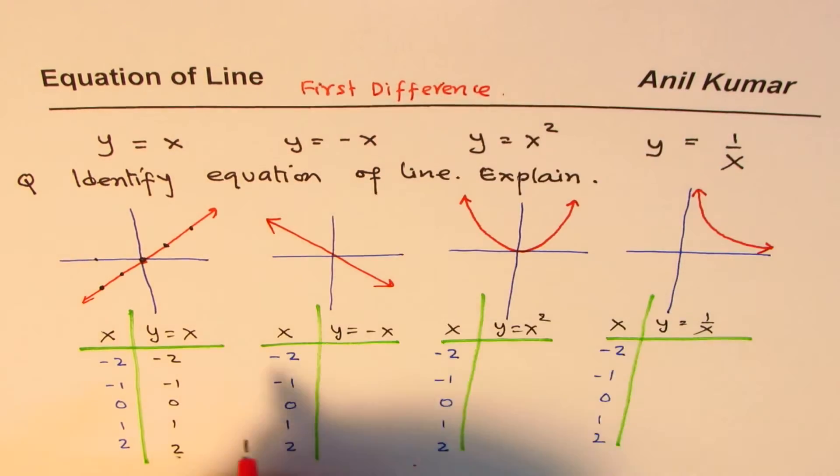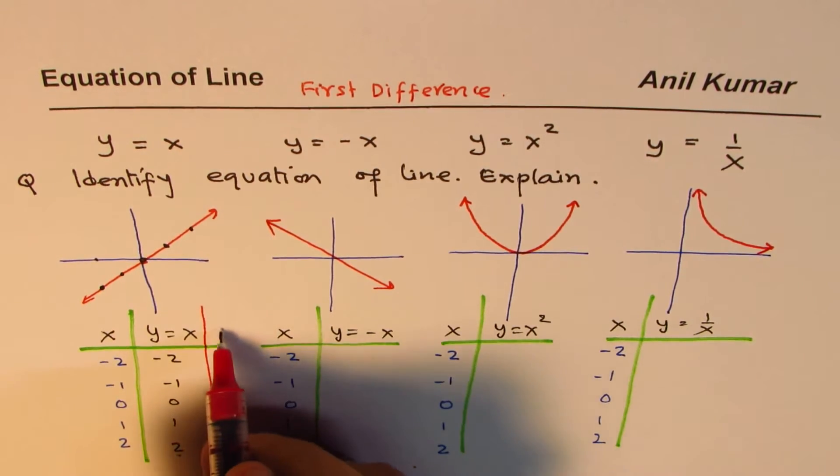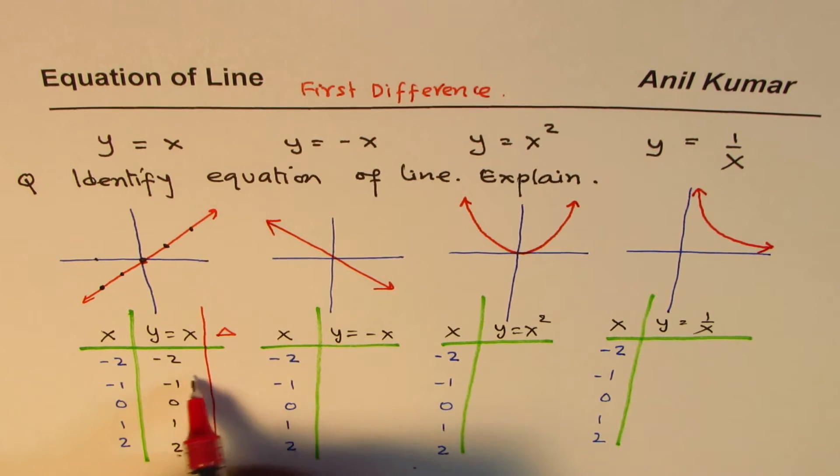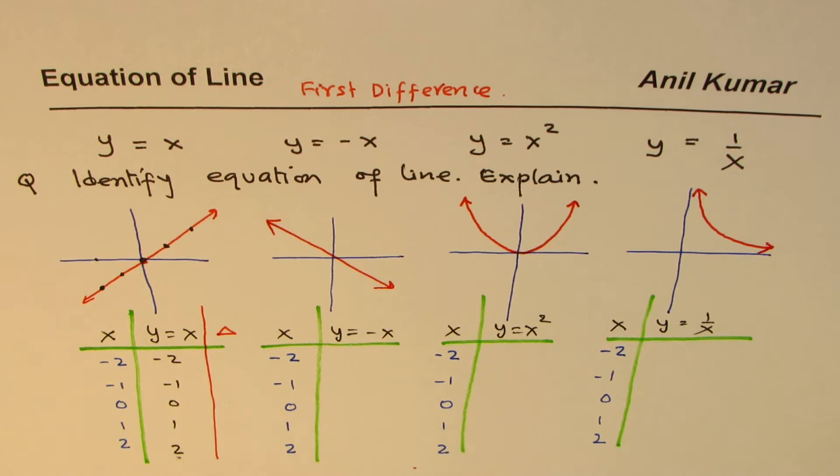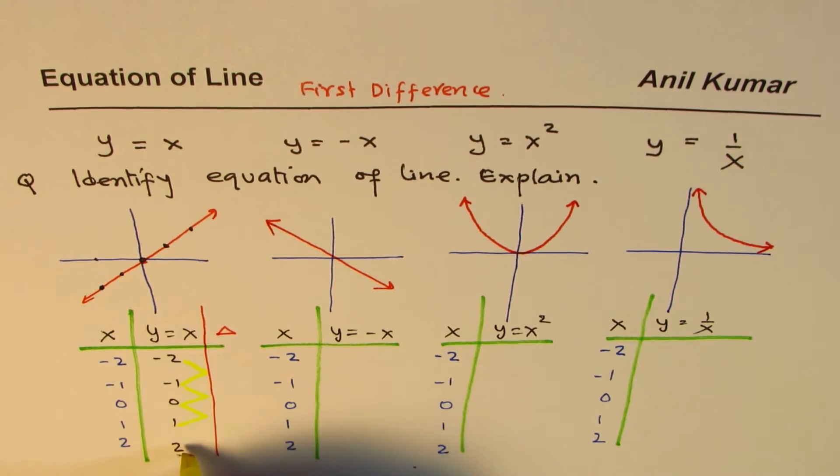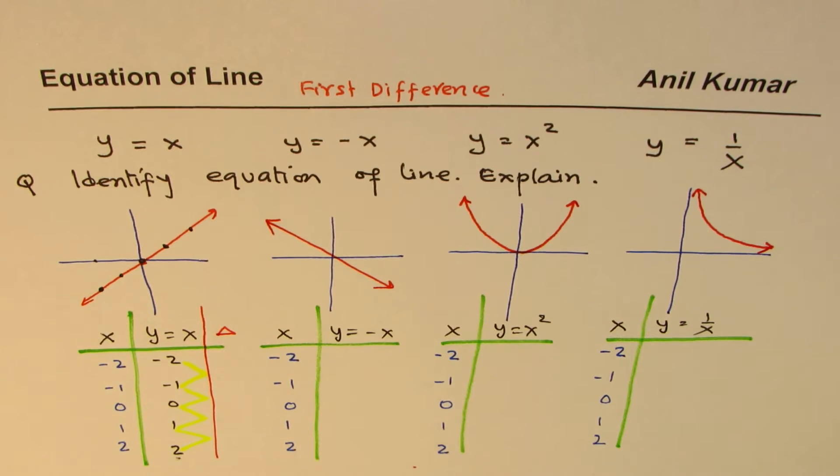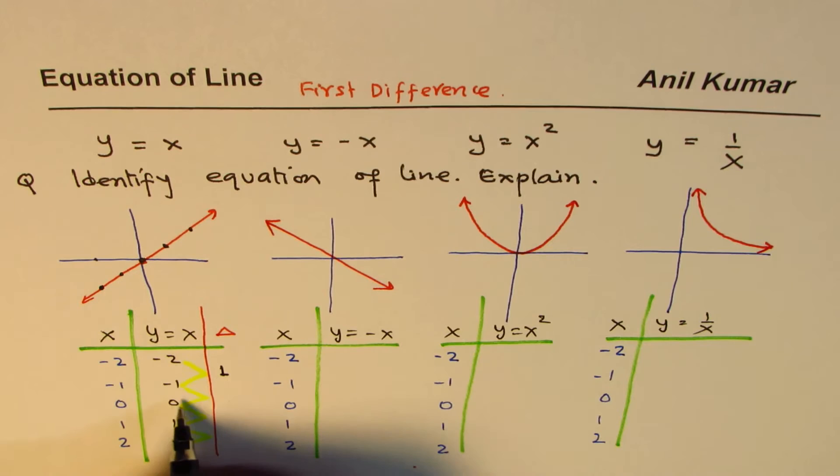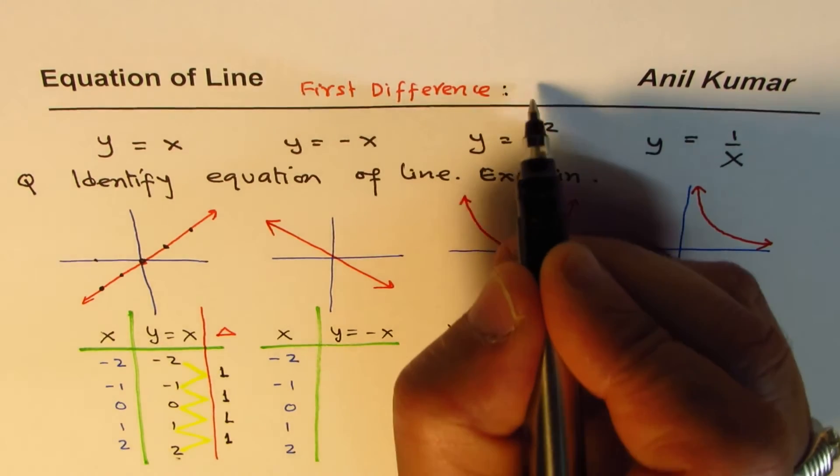This is a very important thing. We make another column here. Delta is my difference. It is from Y2 minus Y1. We say Y2 minus Y1 always. That is to say, it's the difference between this value and this value. We have taken very easy values to work with. Minus 1 minus minus 2 gives us plus 1. 0 minus minus 1 gives us plus 1. 1 minus 0 is 1. 2 minus 1 is 1.